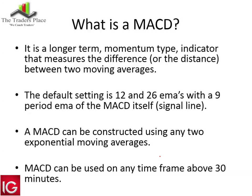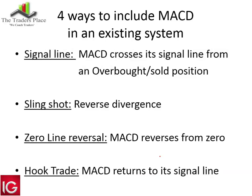Today I'm going to look at four ways to include the MACD in an existing system. I think it's much better applied alongside everything else we know about trading, used as an addition to a trending system. It can help us get into a trend late — the MACD can get you in further up the trend. The four ways are: a simple signal line cross, the slingshot, the zero line reversal, and the hook trade.